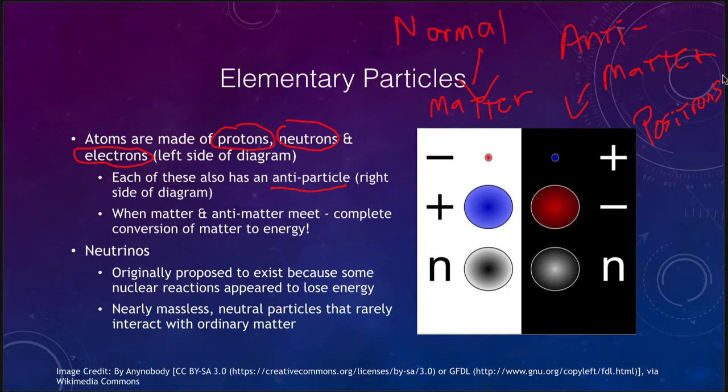When matter and antimatter meet, we get the complete conversion of matter into energy. An anti-proton meeting a proton, they would annihilate each other, the mass would be completely gone. Based on Einstein's equation, that would be completely converted into energy. We could take the mass of the proton and the mass of the anti-proton, add them together, multiply that by the speed of light squared, and that would give us the amount of energy that is created when two of those collide together.